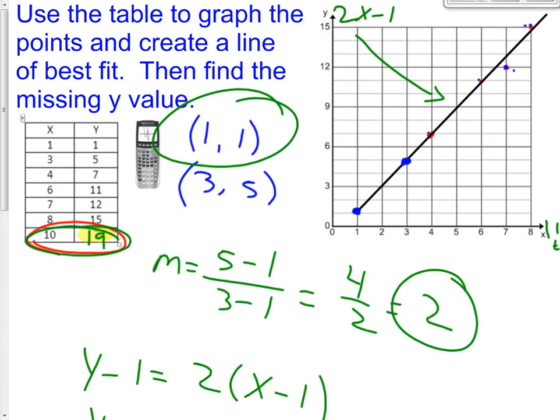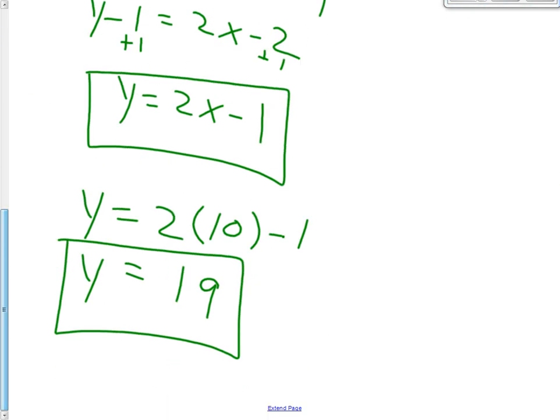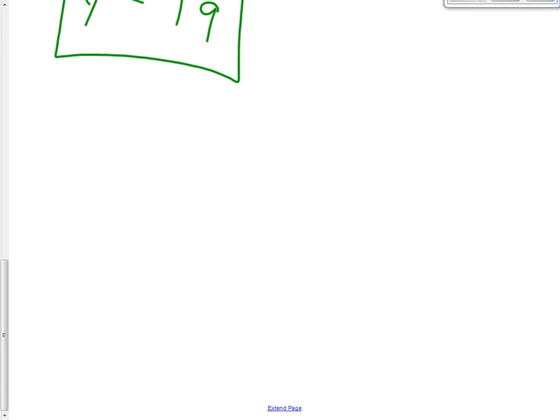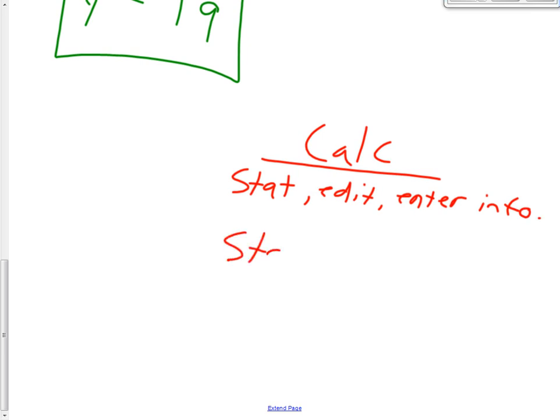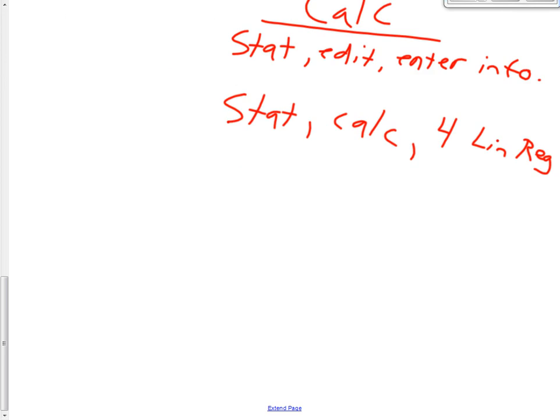So, going back to our smart notebook file, I use my calculator. And, if you want to write this down, I'll write this down just so that you guys can have it. On our calculator, you go to STAT, and then EDIT, and then ENTER INFORMATION. Once you do that, then you go to STAT, scroll over 1 to CALC, and then you go to number 4, which is the linear regression line. And, then you do your L1, L2, so on and so forth.